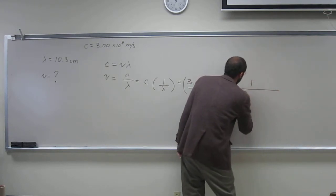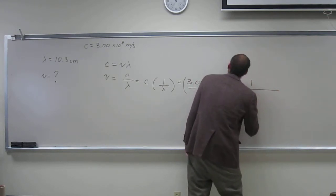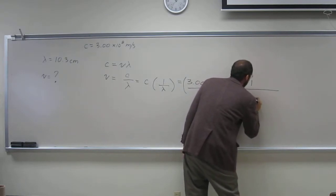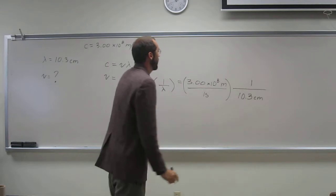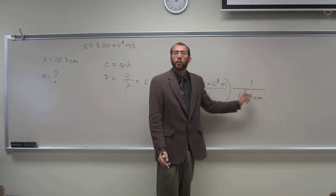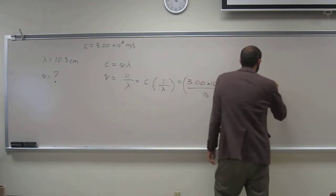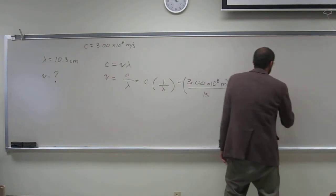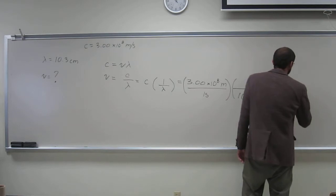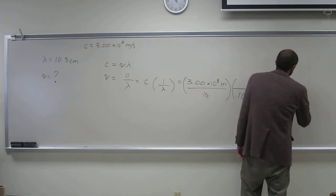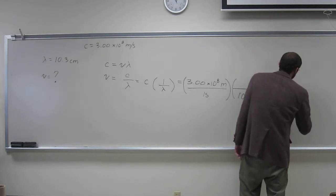So, 1 over 10.3 centimeters is 1 over lambda. So, notice meters and centimeters aren't going to cancel each other out. So, just multiply by the conversion factor that you know. 100 centimeters and 1 meter.